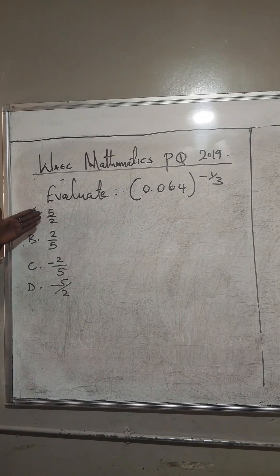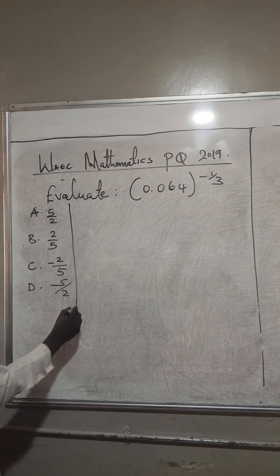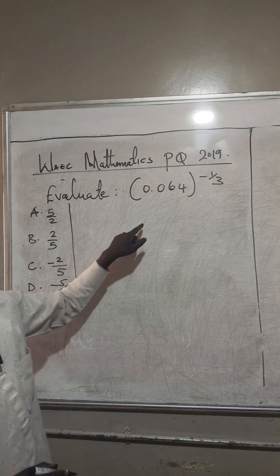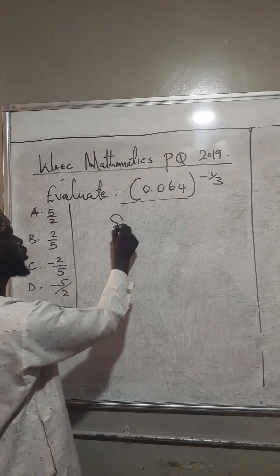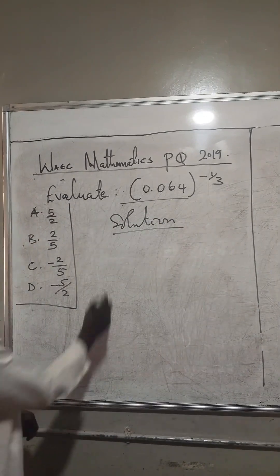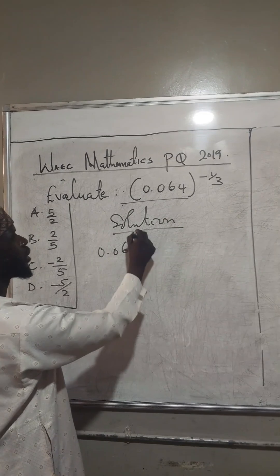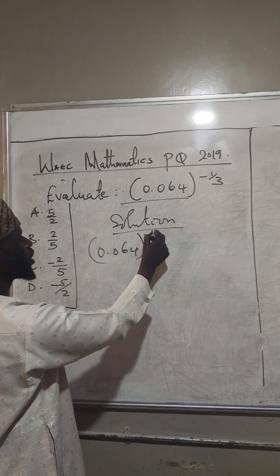The options are here, A, B, C, and D. But for us to determine the right answer, we need to solve. So we have a solution to write 0.064, raised to the power of minus 1 over 3.